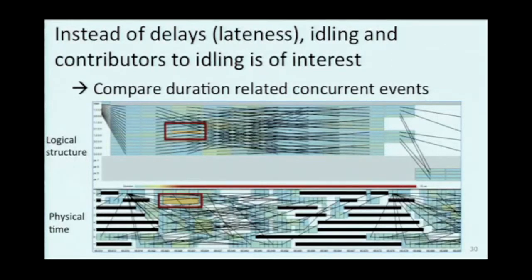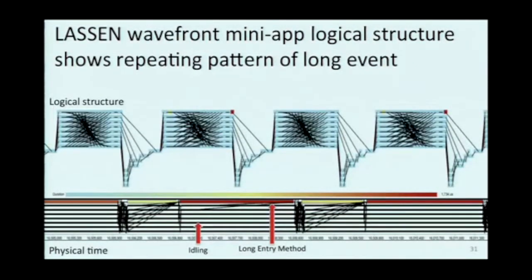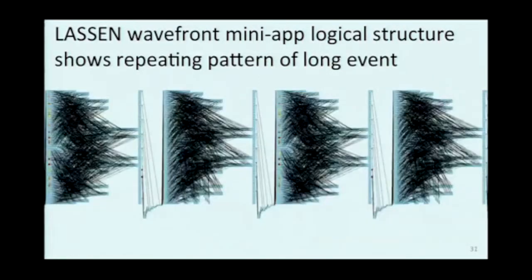A slightly more interesting example: this is Lassen, a wavefront mini-app at Lawrence Livermore. In the physical time view, we see a repeating pattern of really long events and a lot of idling everywhere else. But from the physical time view, I'd have to hunt to figure out whether those are the same entry method or different, and which chare they belong to. When I look at it in terms of logical time, it makes a lot more sense. In the structure, I can easily see this is the same place every other phase in application space, and it's happening on the same chare each time. This will be even more useful when we over-decompose and have a lot more chares going on — and then we can see these are all happening in the same place over and over again. Let's look at why that's occurring.